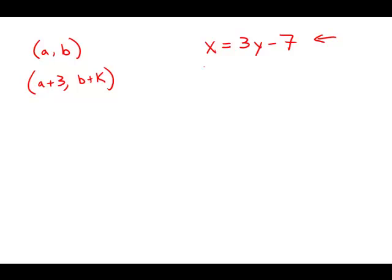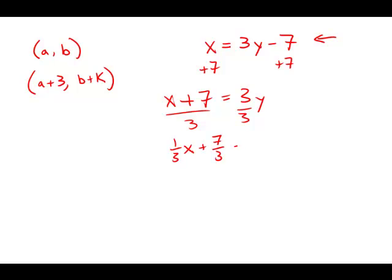We're going to solve for Y. The way I'm going to do that is add 7 to both sides: x + 7 = 3y. Now dividing both sides by 3, what I get is y = (1/3)x + 7/3. Now it's in standard y = mx + b form. That's useful because this number here, 1/3, that's M, or the slope.